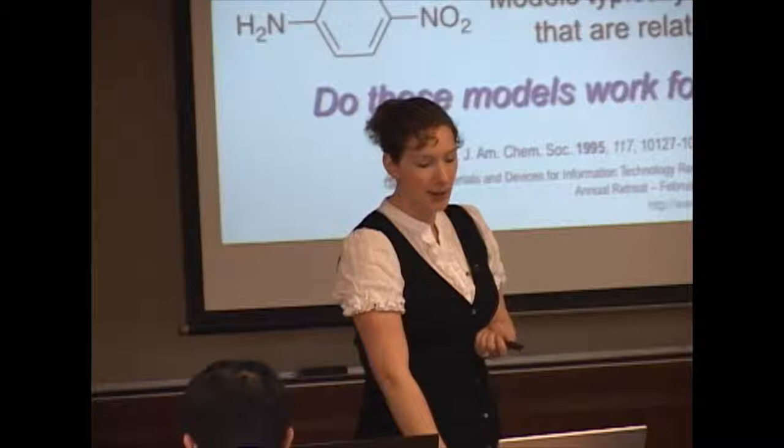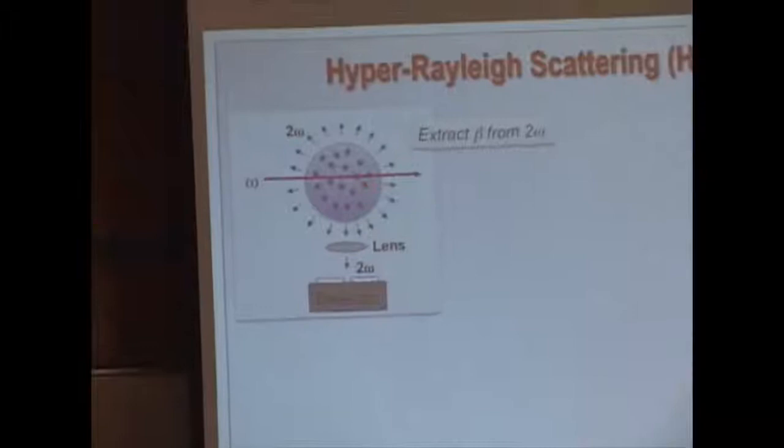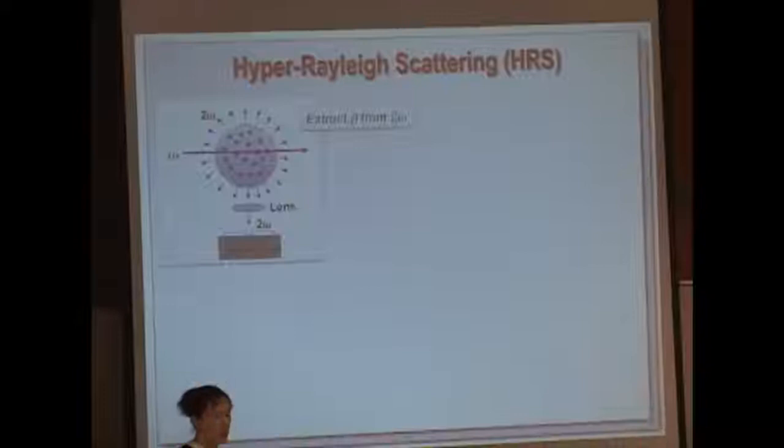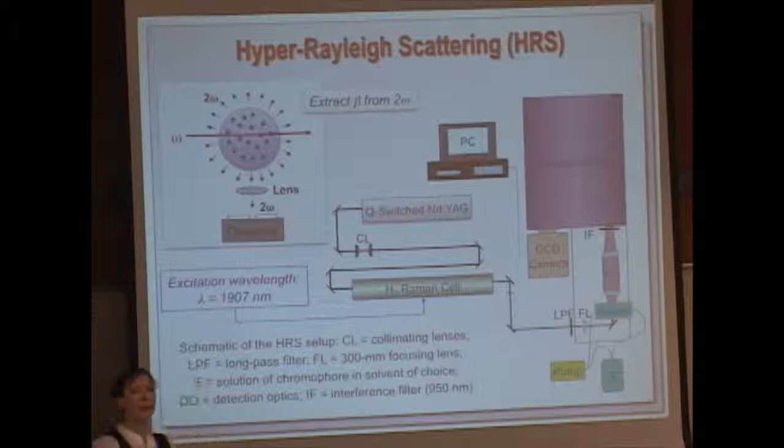Well first, let's talk about how we measure hyperpolarizability. Typically, this is done the most direct way with hyper-Rayleigh scattering. In this case, we use an intense laser field going through a chromophore solution, generating incoherently scattered second harmonic, your hyper-Rayleigh scattering. From this, we can directly extract the hyperpolarizability from that second harmonic. Specifically for these measurements, we're using 1.9 microns.